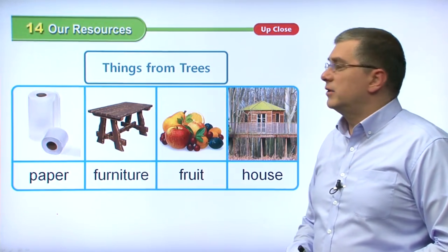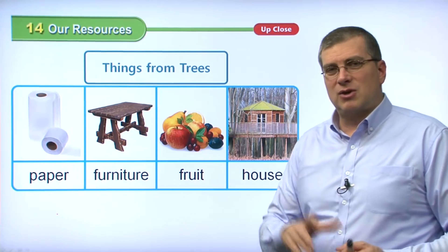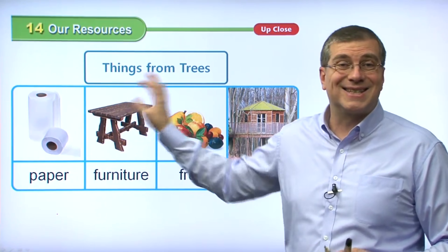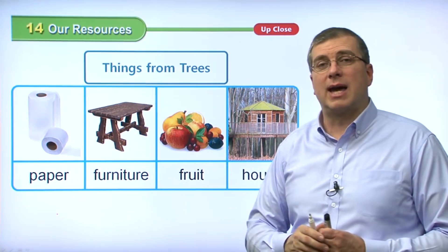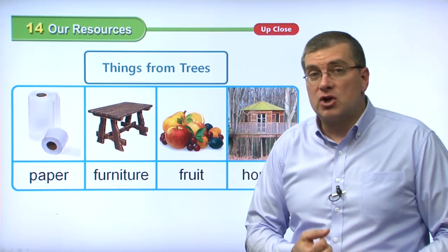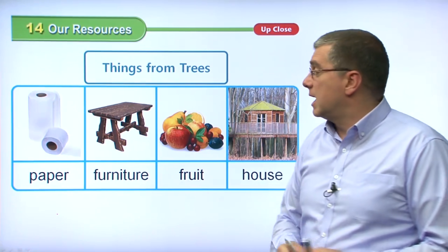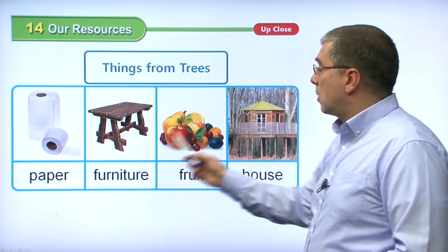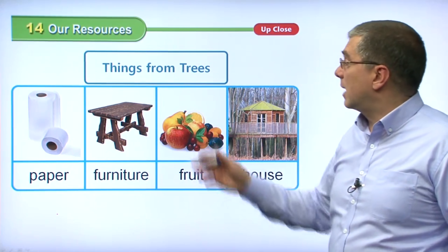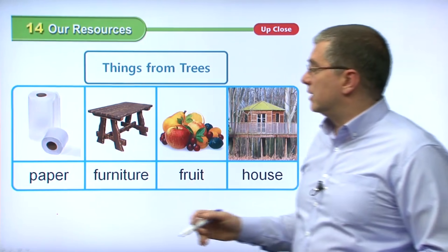Let's move on to our chart. Remember I talked about trees — trees are an important natural resource. It's one of the last things we looked at on the chart. I talked about how we make paper from it and furniture from it. We can also use wood to make houses. Here are four things that we use wood for: things we make from trees.